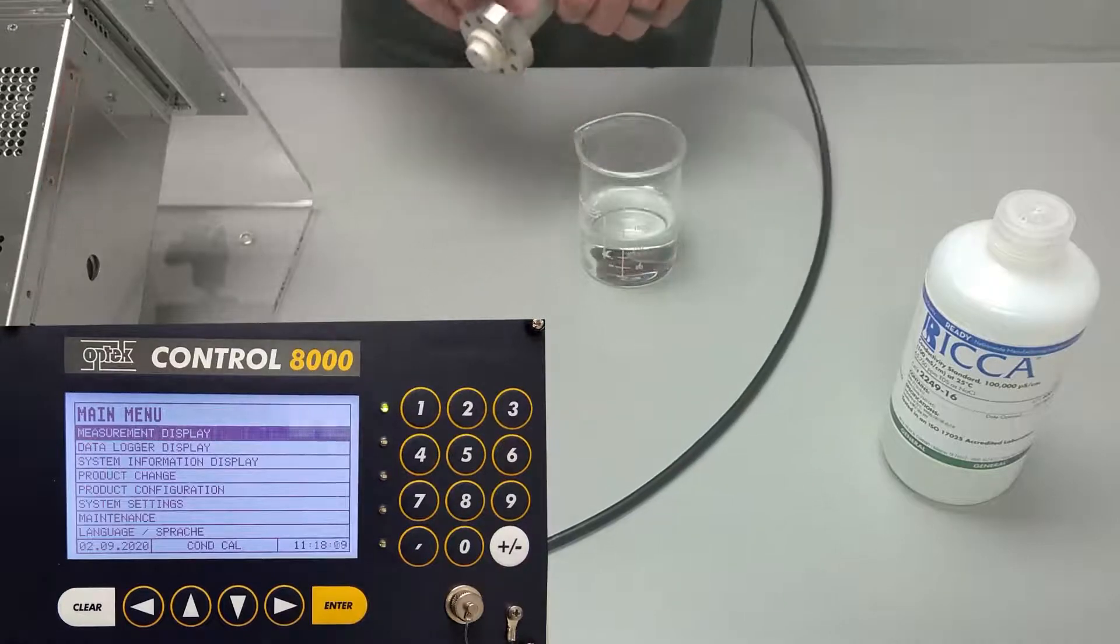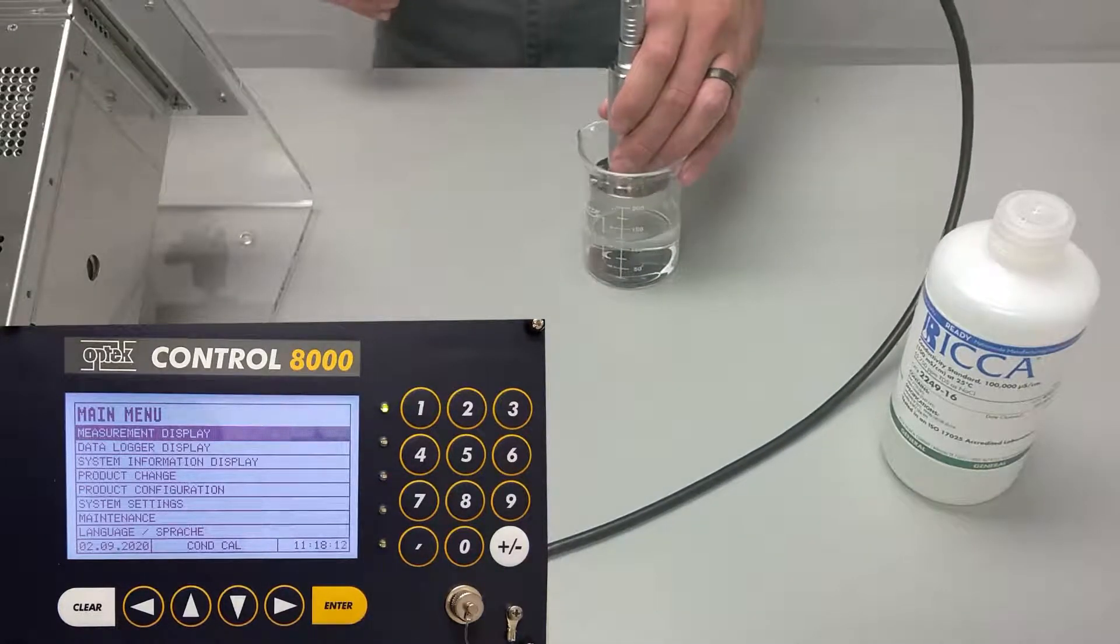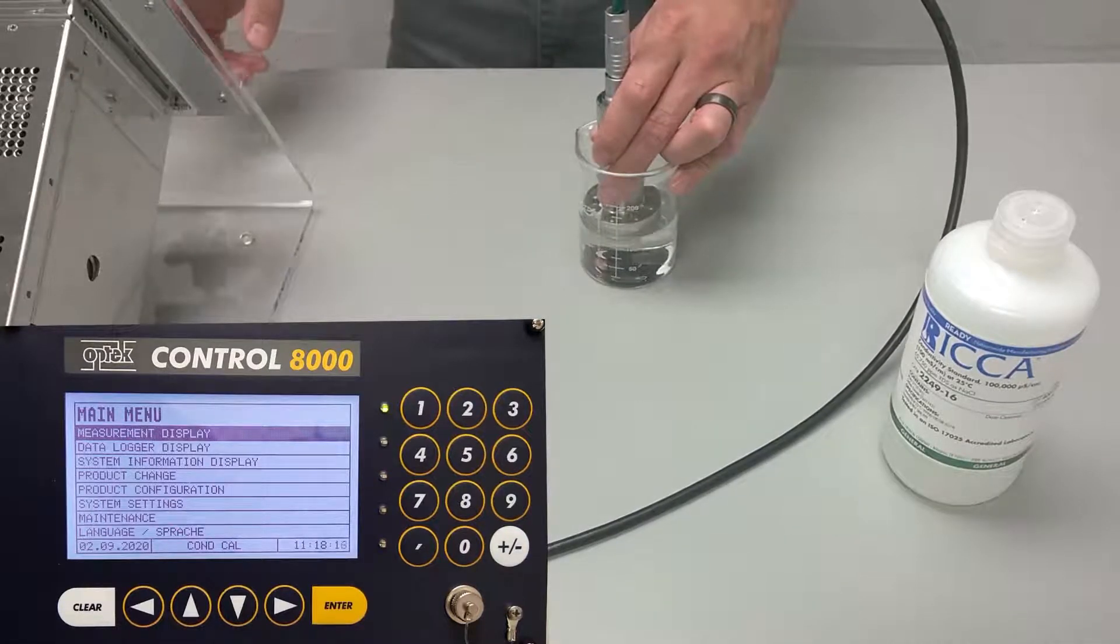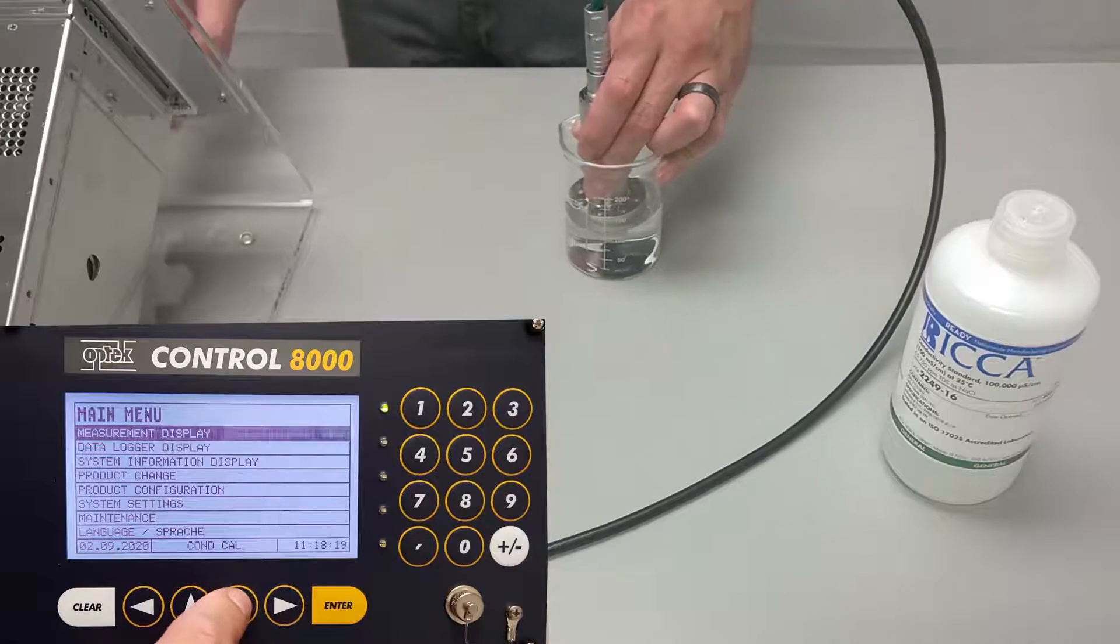Now we'll start the calibration portion. Introduce the conductivity sensor to the solution and ensure there is at least an inch of space between the bottom of the beaker and the probe to avoid wall effects.